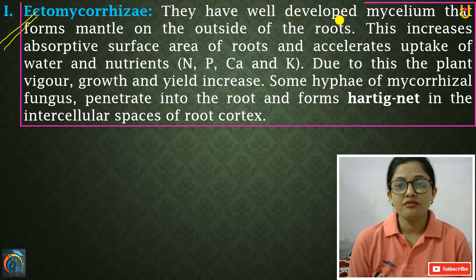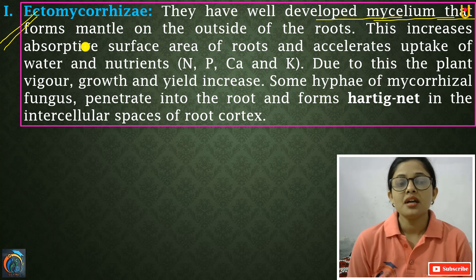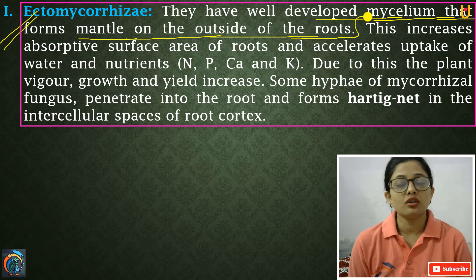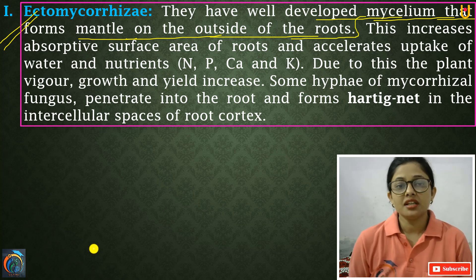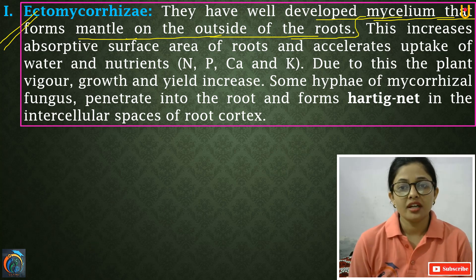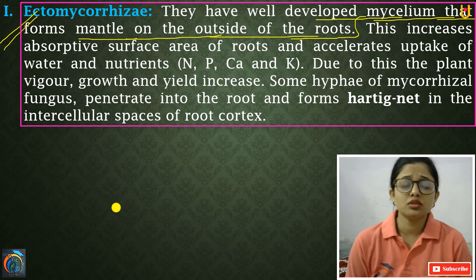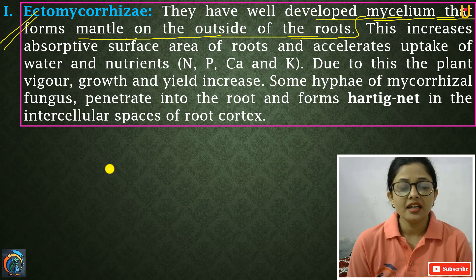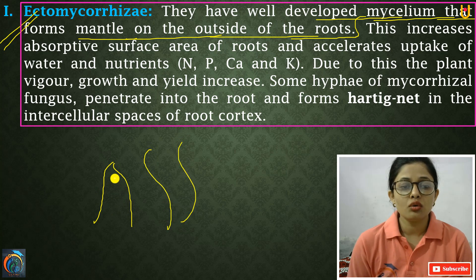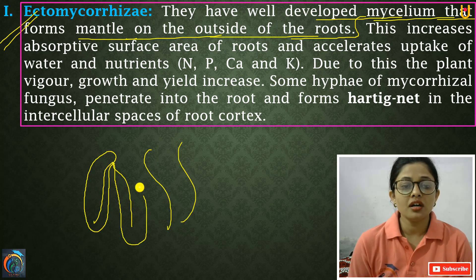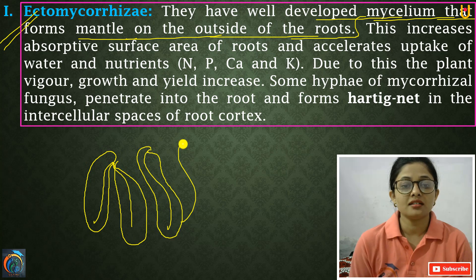Ectomycorrhizae have a well-developed mycelium that forms a mantle on the outside of the roots. The mantle means the outer layer — the fungus forms an outer layer around the plant roots.